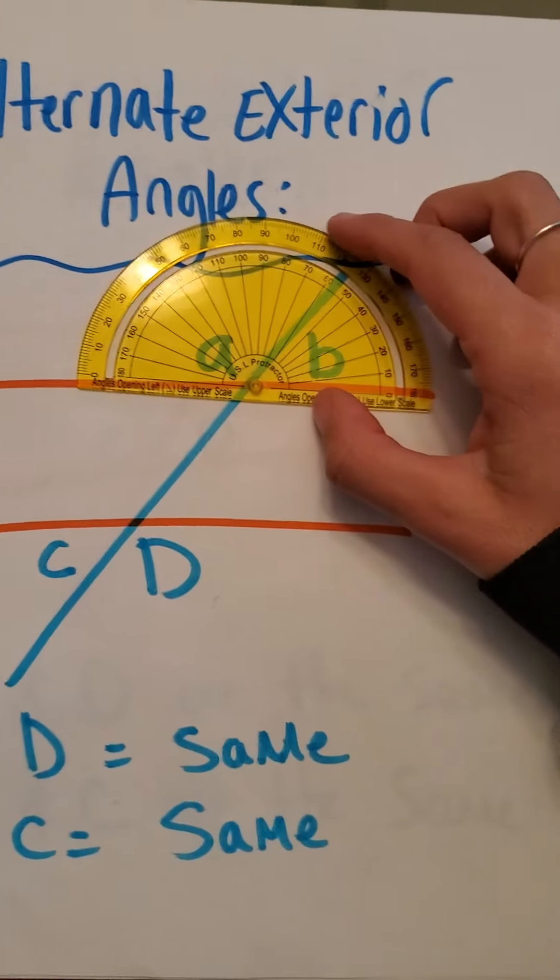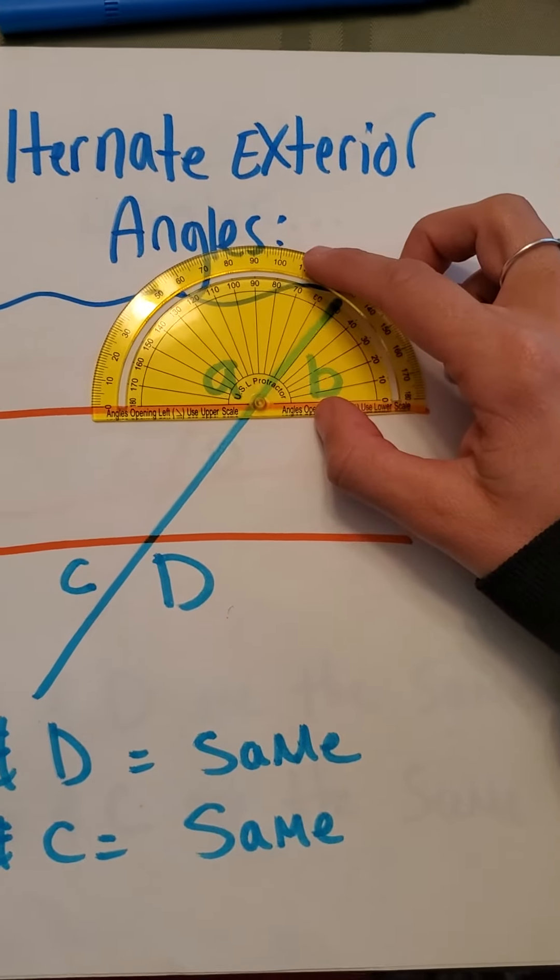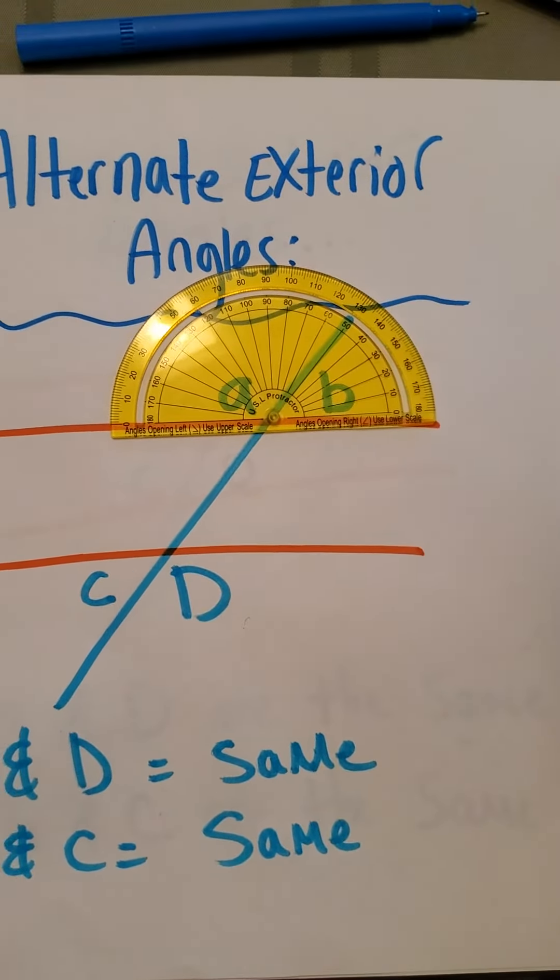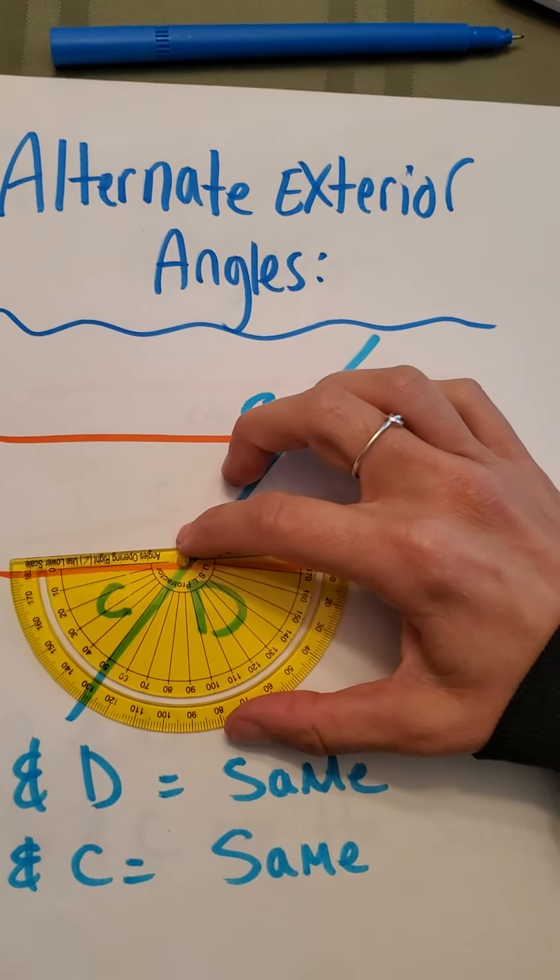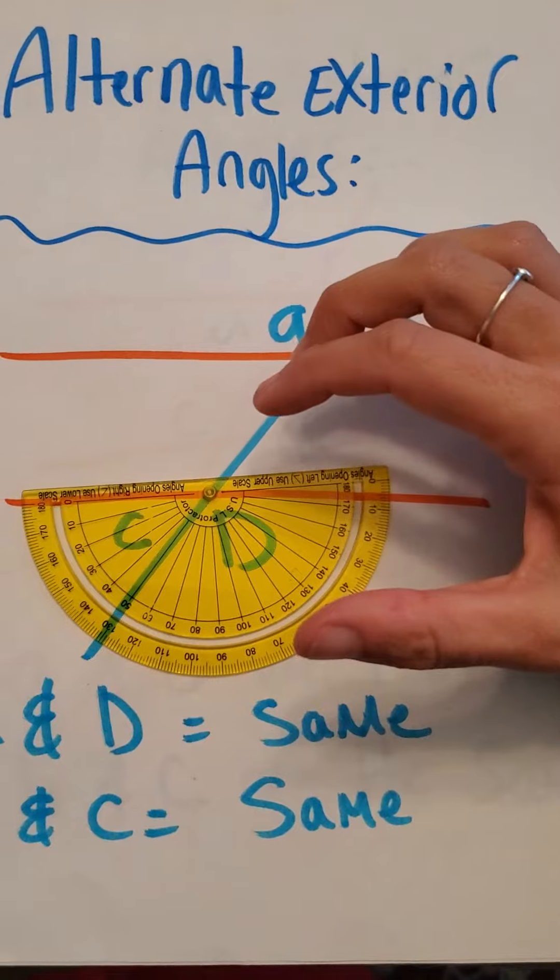So that means B, let's measure out B, 50 degrees. So C is going to be about the same. And there you have it.